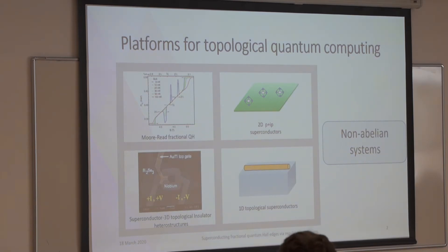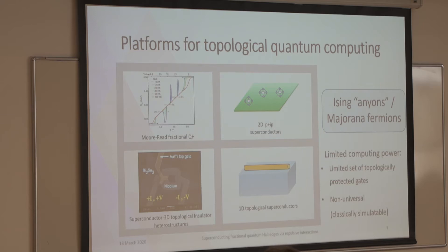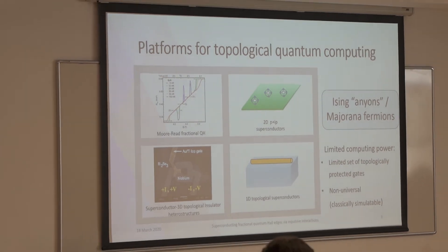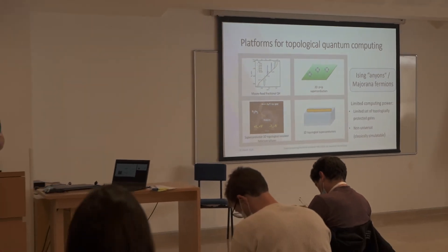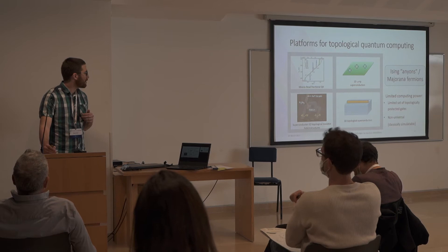On the slide, you can see four prominent proposals for realizing a non-abelian system: the Moore-Read quantum Hall state, the P plus IP superconductor, an interface of a superconducting topological insulator, and a one-dimensional P-wave. One key feature they share is that their non-abelian nature is characterized by having Majorana fermion zero modes. As a consequence, their computational power in topological quantum computing is quite limited — the set of topologically protected quantum gates is non-universal and is in fact classically simulatable.